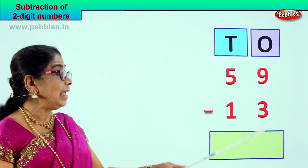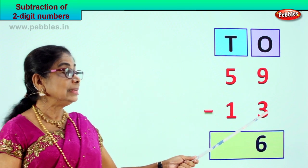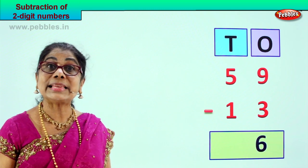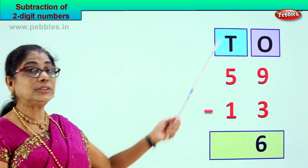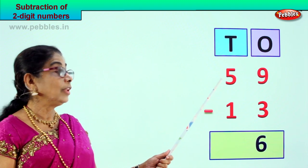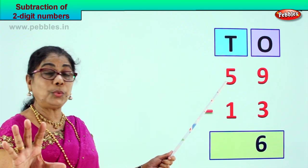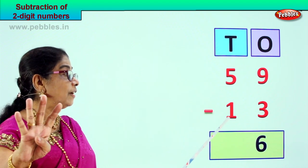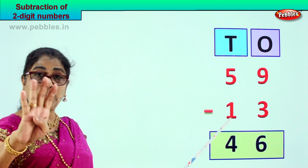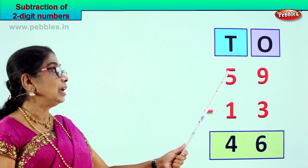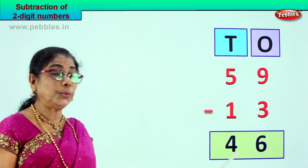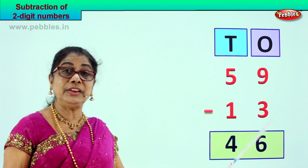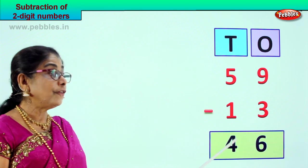Nine take away three — three, four, five, six, seven, eight, and nine — nine minus three is six. Now let's go to the tens place. Five minus one is four — five take away one, four left. Five minus one is four. 59 minus 13, your answer is 46.